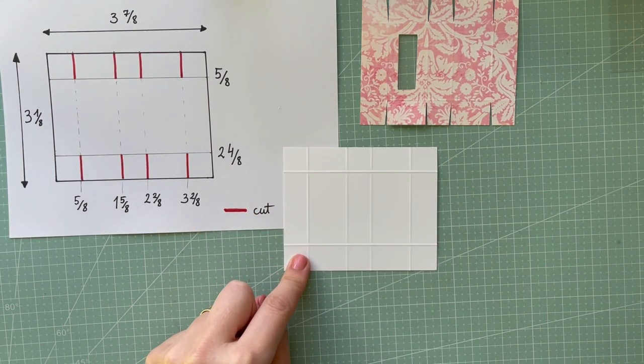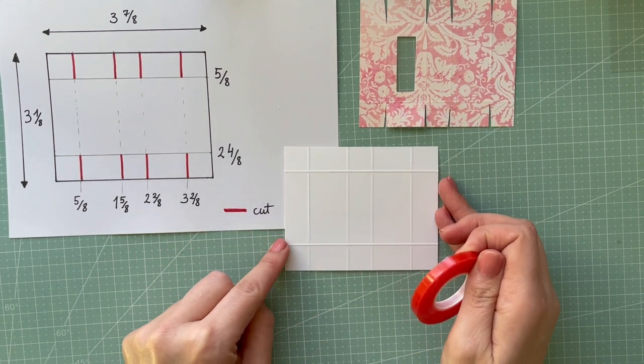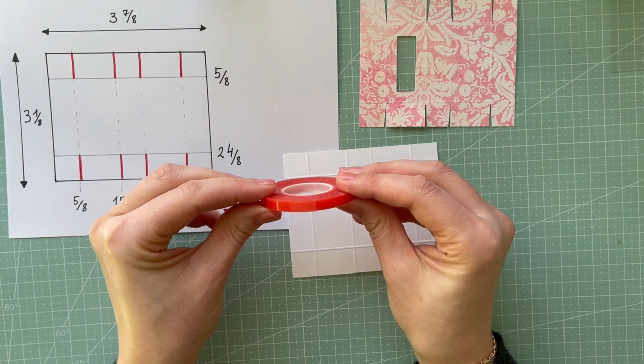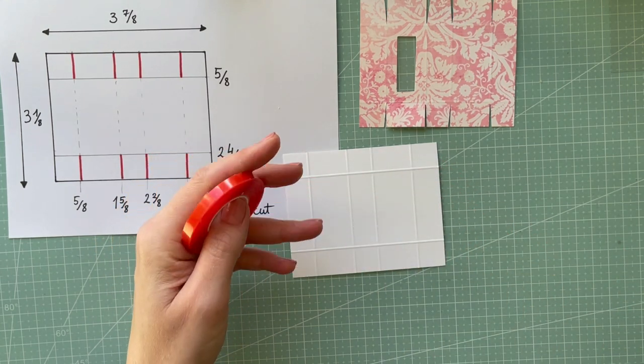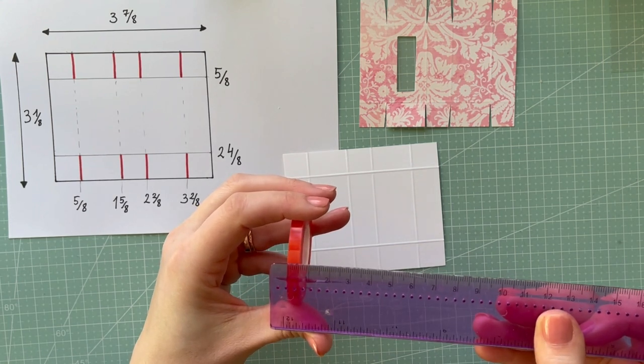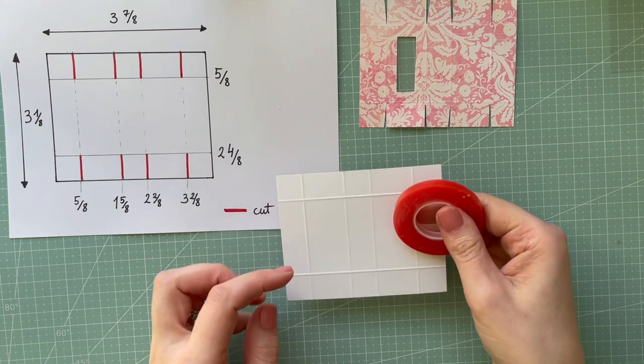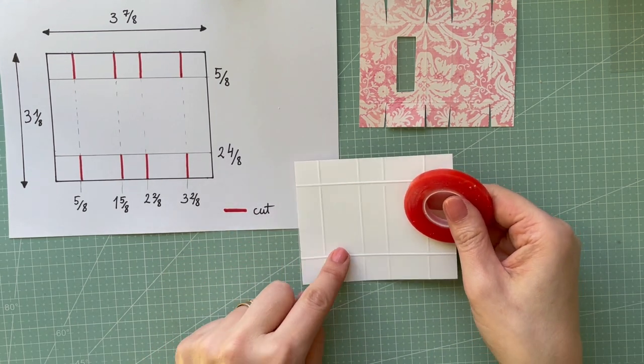Before I do the score lines and cuts, I'm going to use my red liner tape because I want to create that window with acetate. I've got, I think this one is 6 millimeters red liner tape.